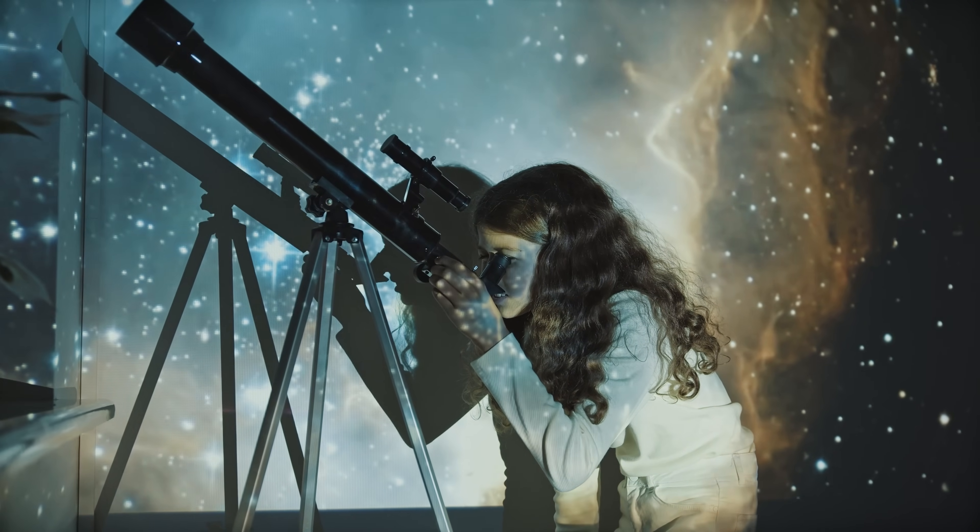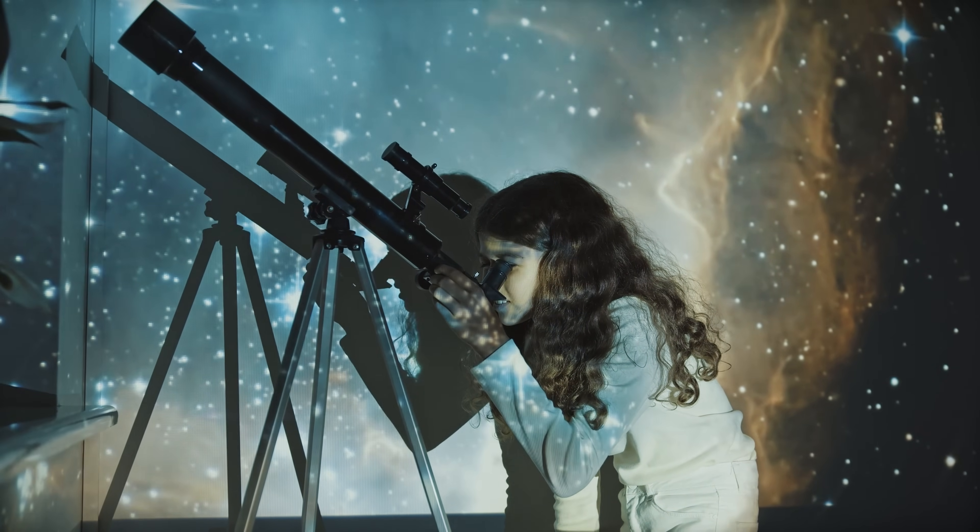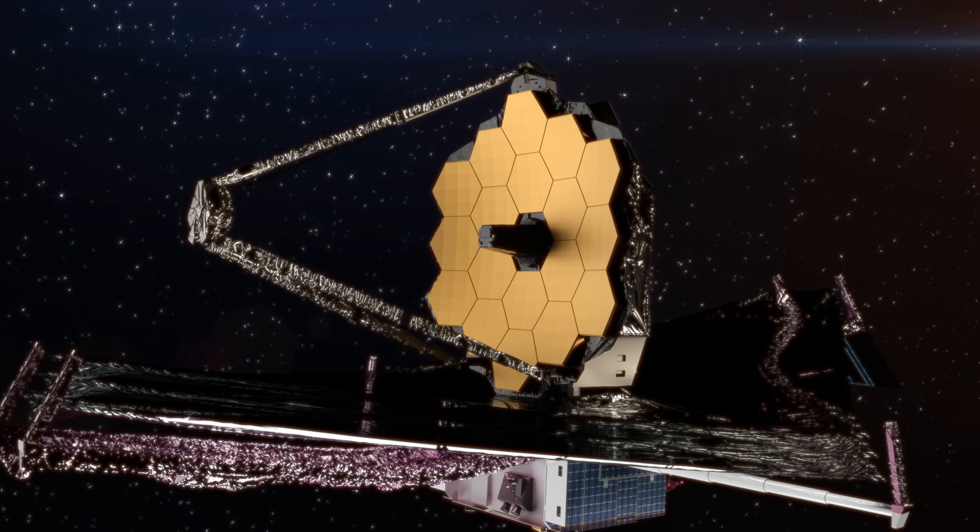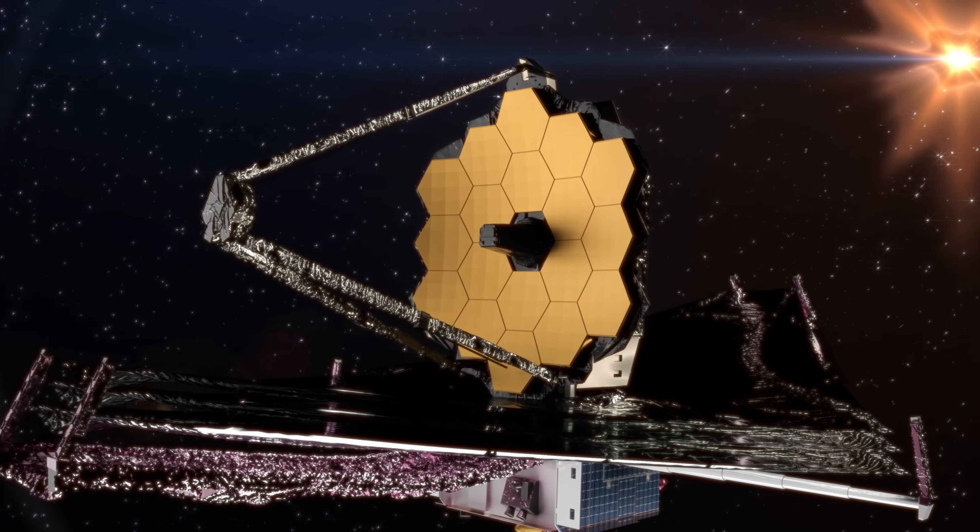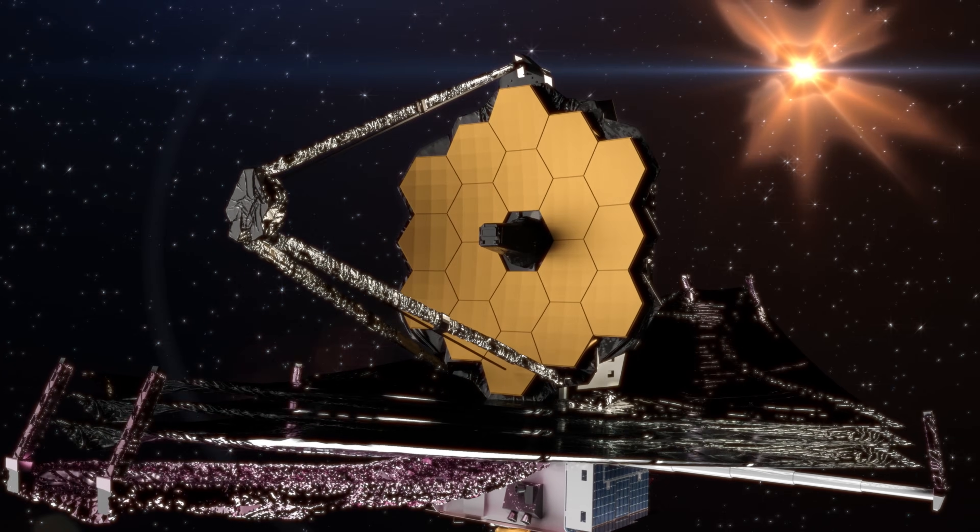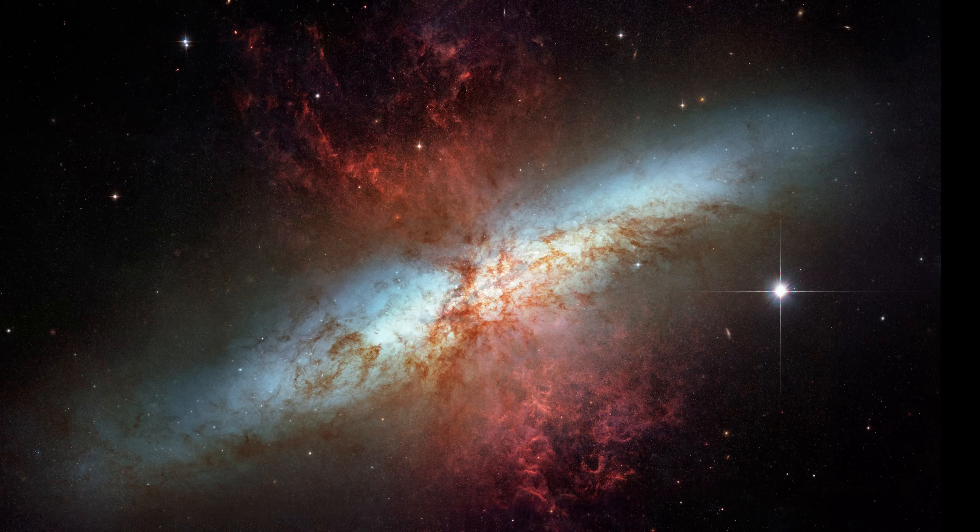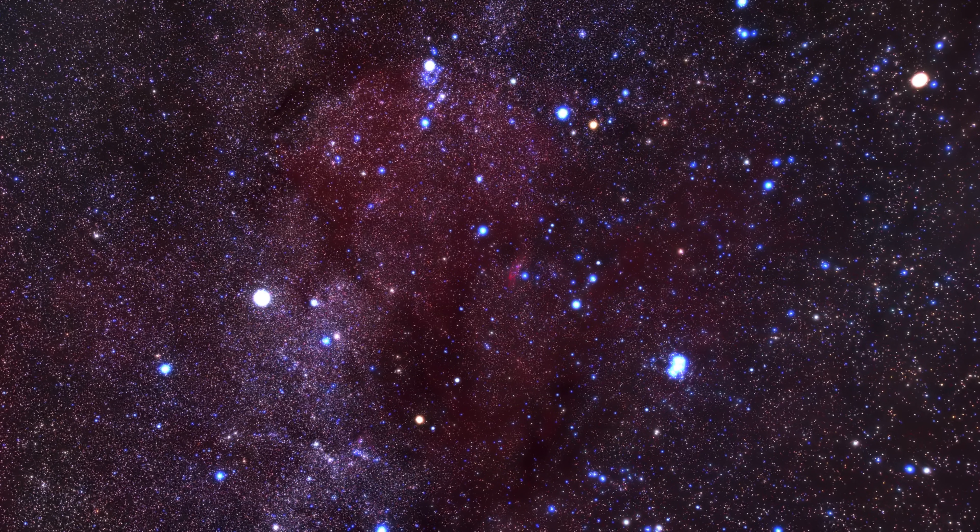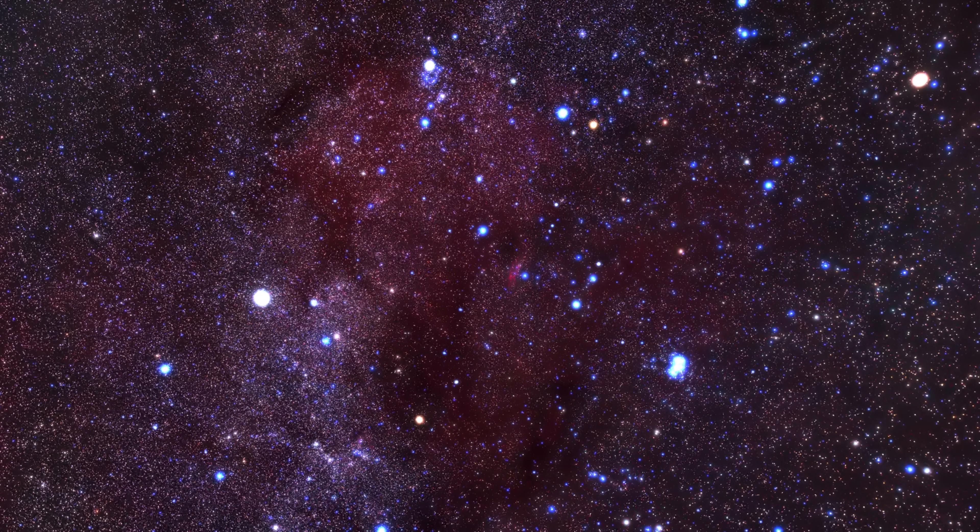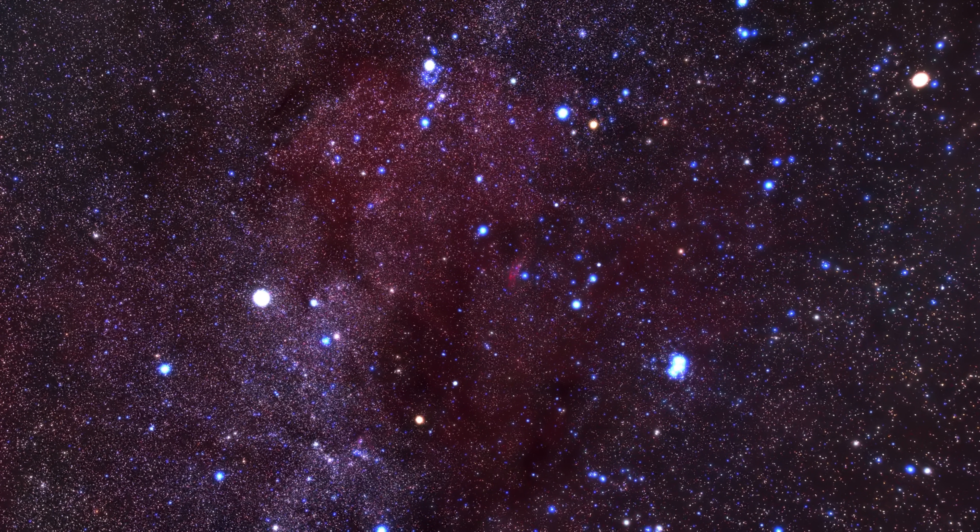Space enthusiasts, this one's for you. Ever wondered where all the stars come from? Astronomers using NASA's brand-new James Webb Space Telescope just got a peek into a galactic factory called Messier 82. This incredible galaxy is churning out stars at ten times the rate of our Milky Way. Studying this stellar nursery could unlock secrets about how galaxies evolve and create new stars.